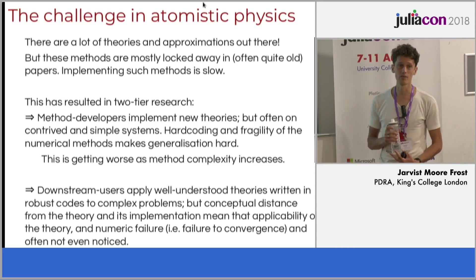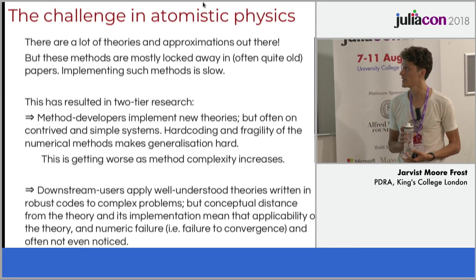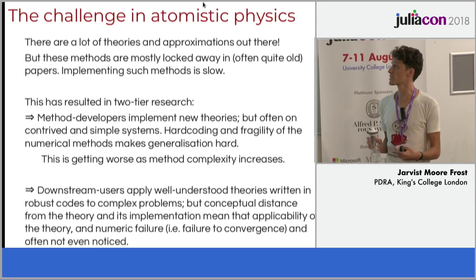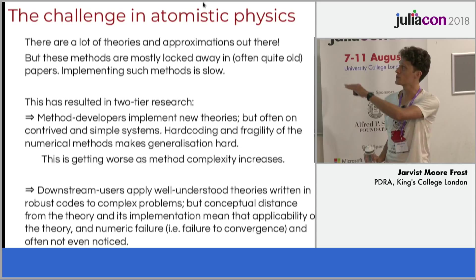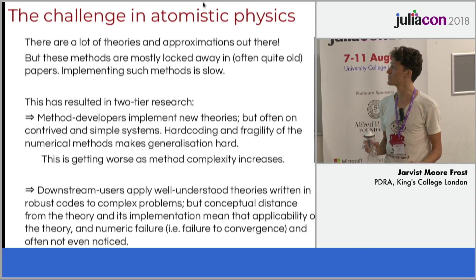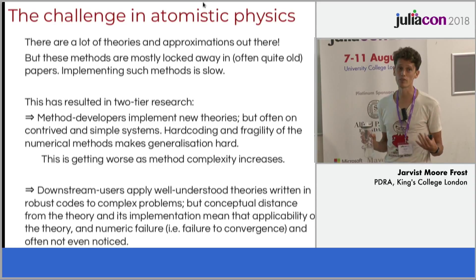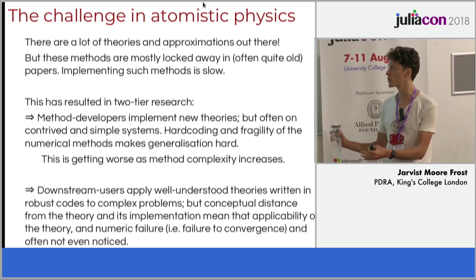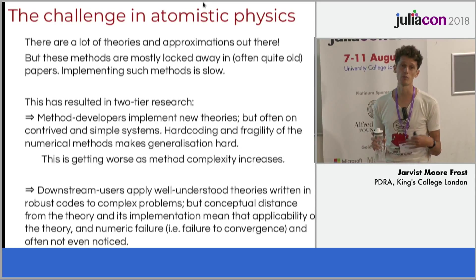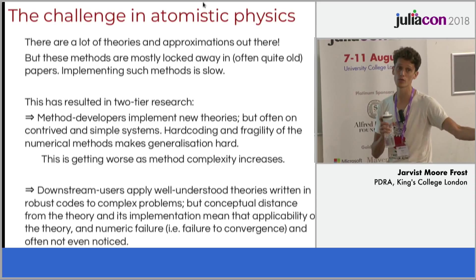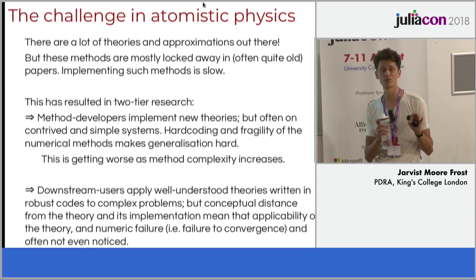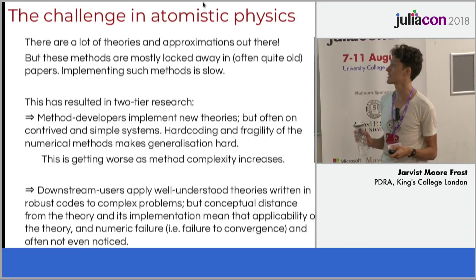The challenge in atomistic physics is that we have a lot of theories, and a lot of very nice work in Physical Review papers from the 50s, 60s, and 70s which has never really been implemented, simply because it's too much effort. We've ended up with two tiers of research: people who do method development implement new theories, but often on simple contrived systems with brittle code. The more downstream users apply well-understood theories but, separated from the code, don't necessarily know what's going on.